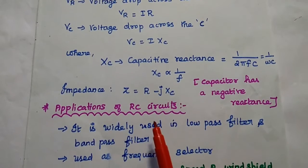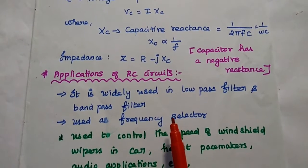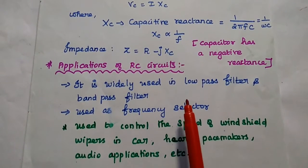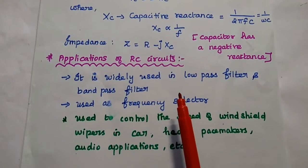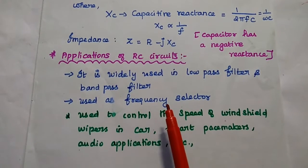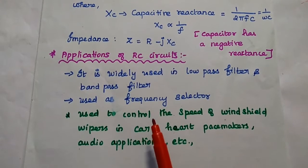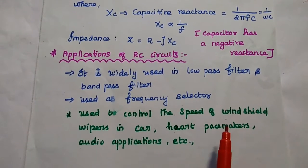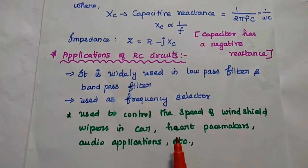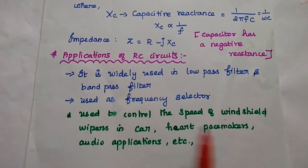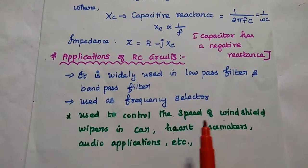Next, the applications of RC circuits. This RC circuit is widely used in low pass filters and band pass filters due to the characteristic of capacitance being inversely proportional to frequency. It can also be used as a frequency selector. In real-time applications, we can use this RC circuit to control the speed of windshield wipers in a car, heart pacemakers, audio applications, traffic light systems, etc. Wherever frequency filtering is needed, we can use RC circuits.